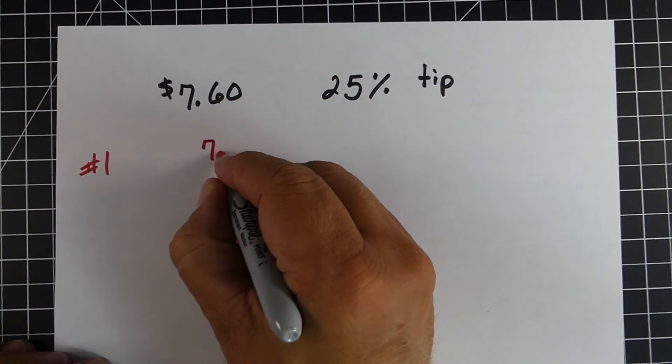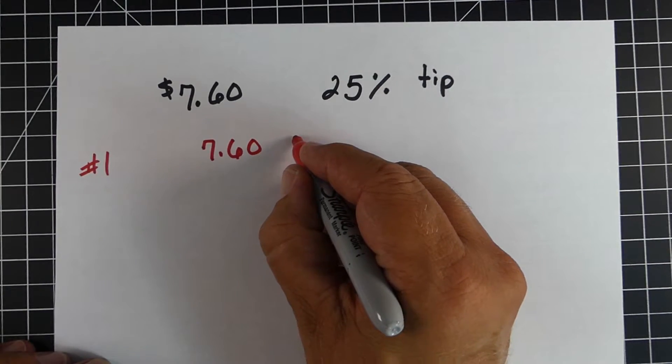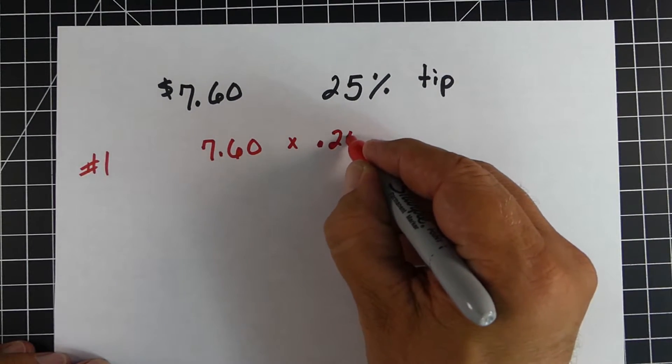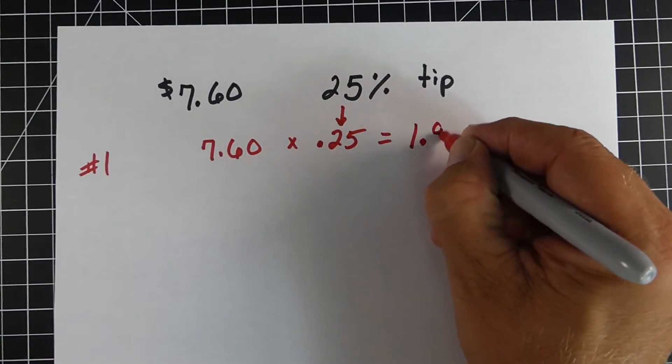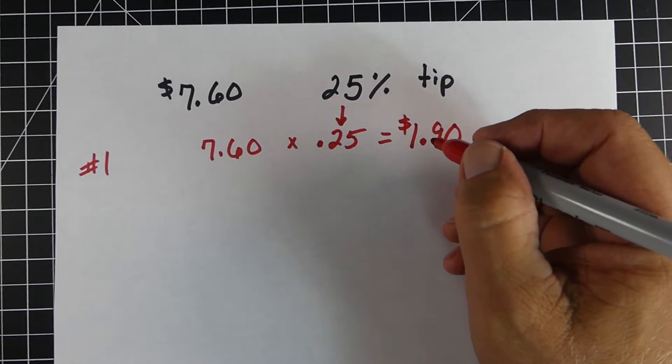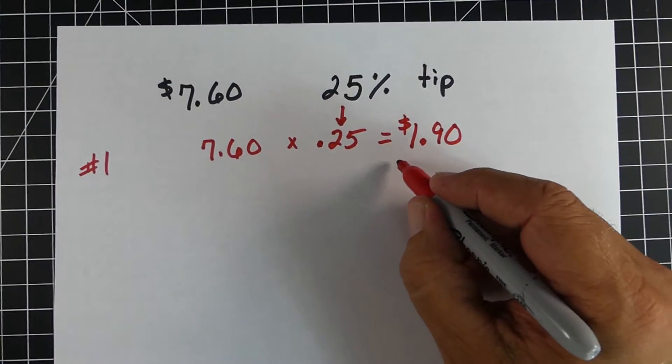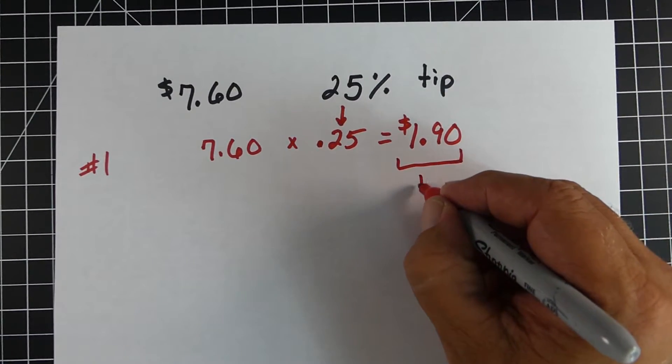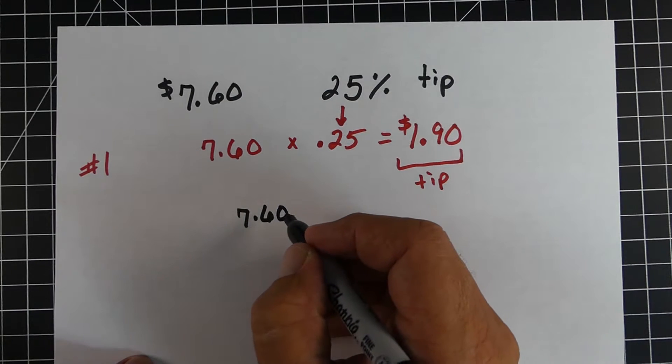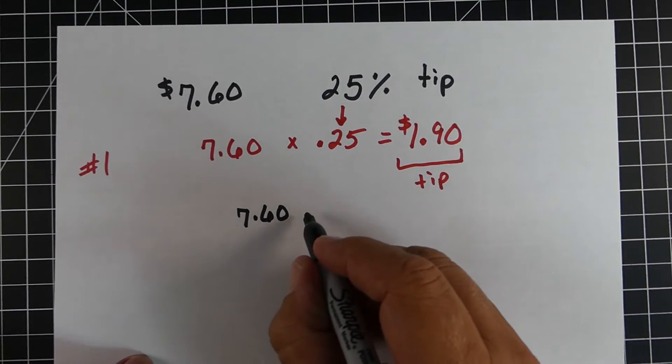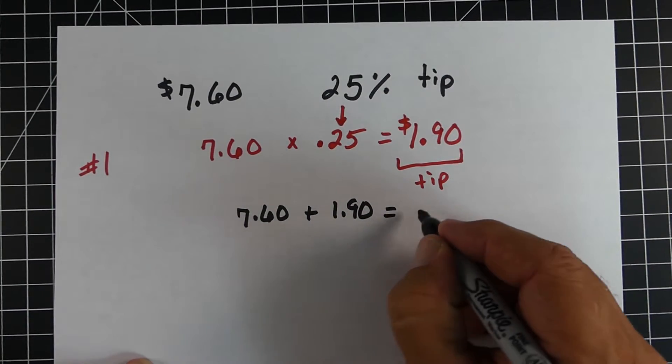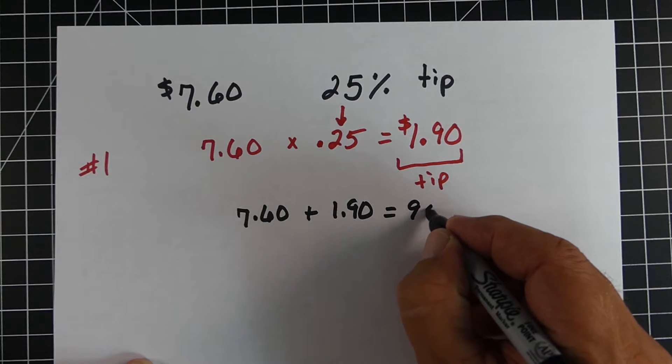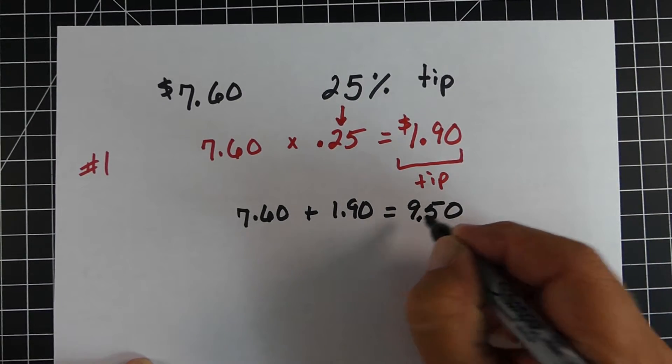So here's example number two. So in this example, we have a $7.60 meal, and we decide we're going to leave a 25% tip. So you can see we're taking 7.60 times .25, which is 25% written as a decimal, and we get $1.90. Now, this $1.90, this is going to represent the amount of tip that we're going to leave for the waiter or the waitress. So in this first method, we would take the total cost of the meal, which is $7.60, and we're going to add the amount of tip that we're going to leave for the waiter or waitress. And so when we do that, we end up with $9.50.